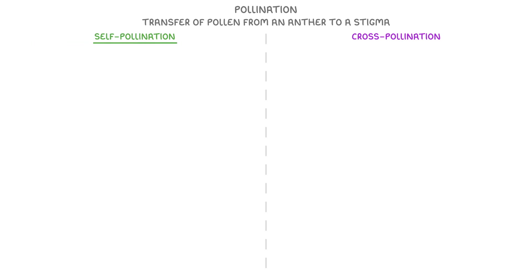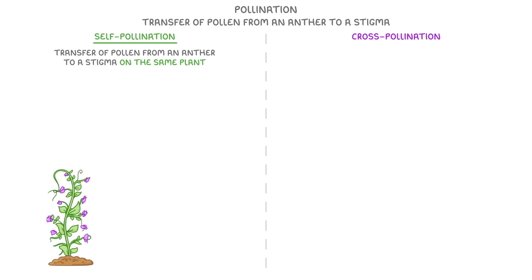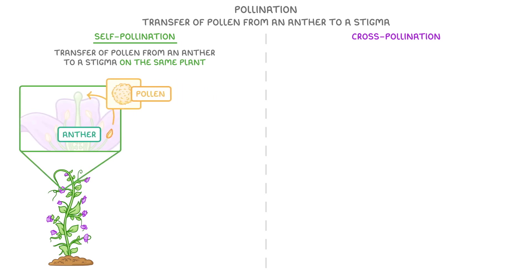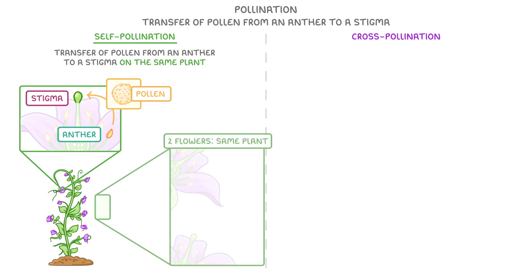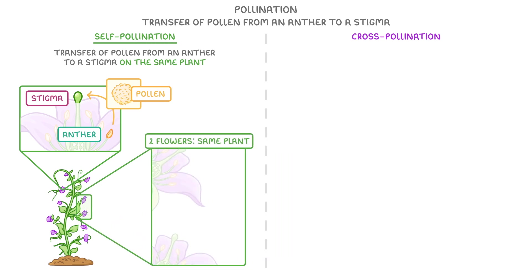Starting with self-pollination, this is the transfer of pollen from an anther to a stigma on the same plant. For example, an anther here could produce pollen that then self-pollinates this stigma on the same flower. Importantly, though, self-pollination can also happen between two flowers from the same plant — so if pollen from one anther travels to a stigma on a different flower of the same plant, this would also be self-pollination.